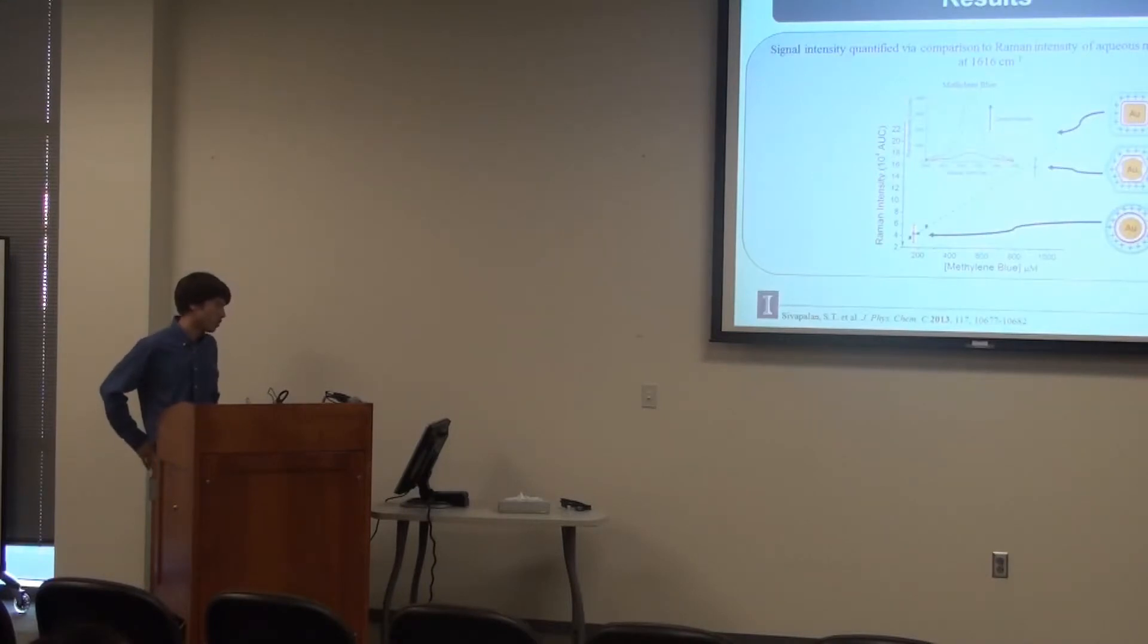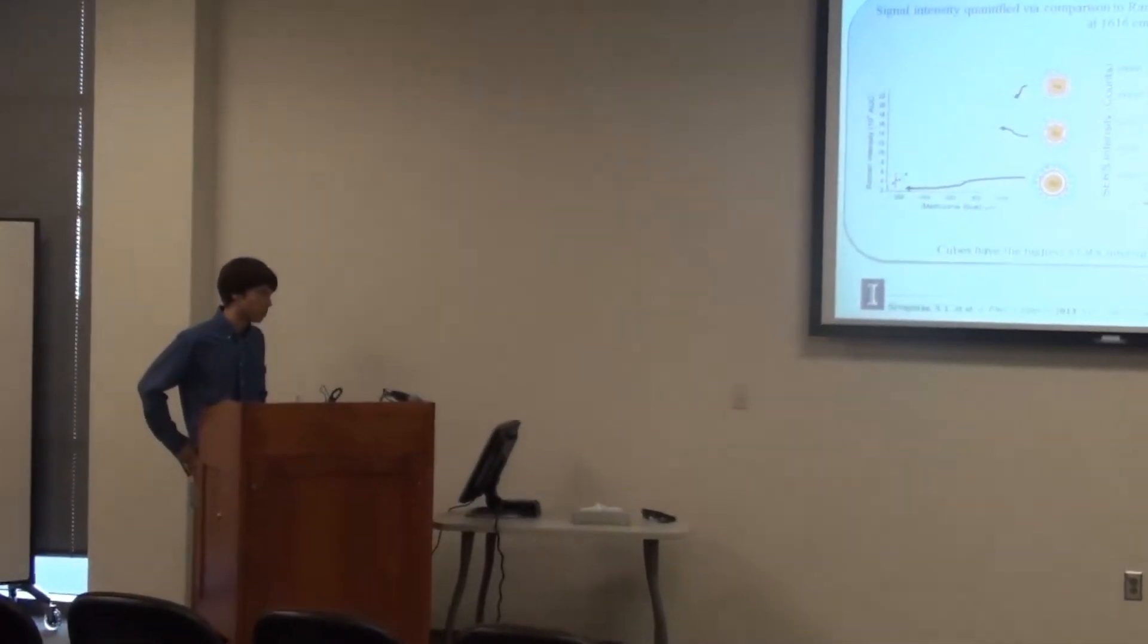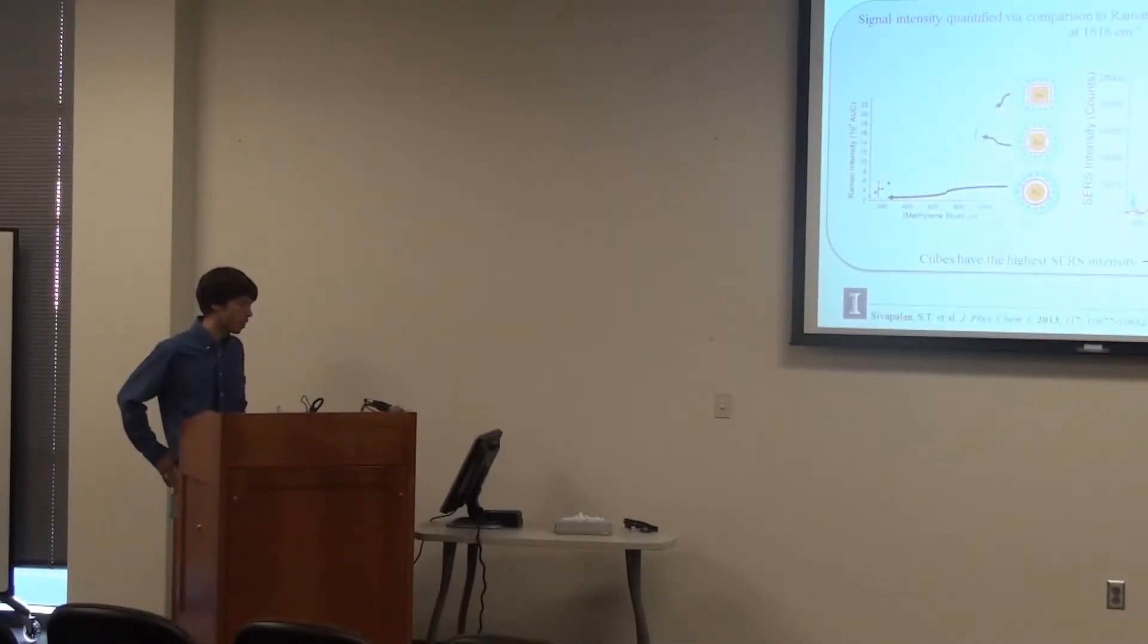So what we did is we did this in triplicate. And basically what we did is build a calibration curve based on methylene blue, which is our analyte of interest. And we found that spheres have the poorest signal, whereas tris octahedra and cubes have relatively large signals. And this is the Raman spectra of our different shapes. And you can see that cubes indeed have the largest signal.